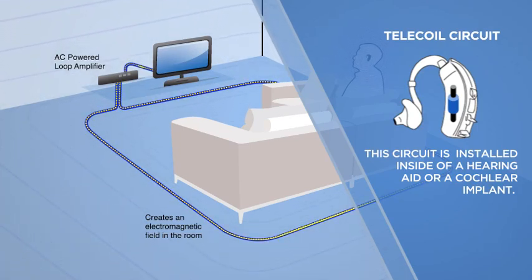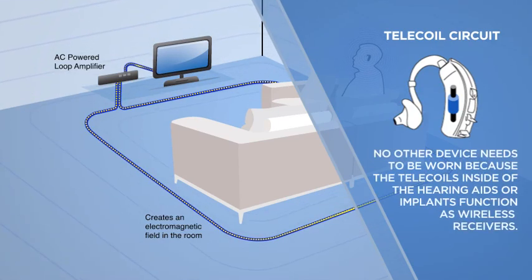By using hearing aids or implants equipped with telecoils, the listener can walk into a looped room, turn on the telecoils and begin to hear. No other device needs to be worn because the telecoils inside of the hearing aids or implants function as wireless receivers.